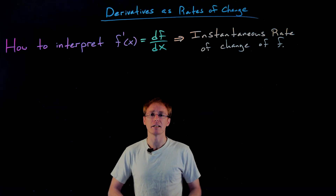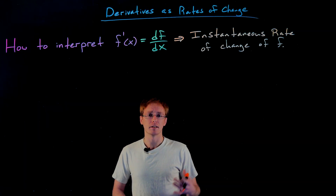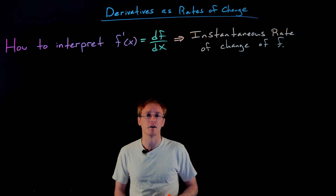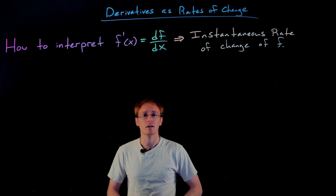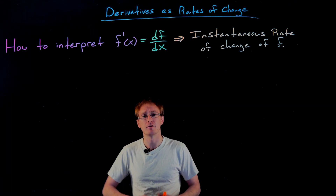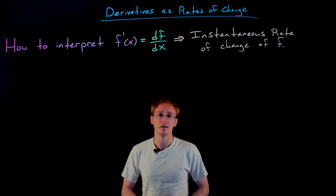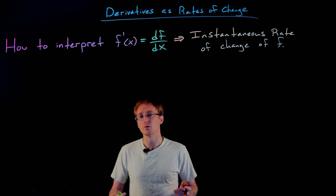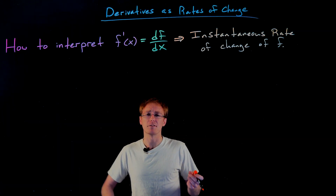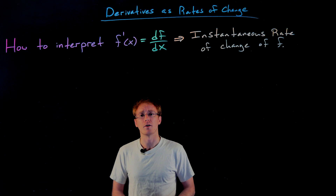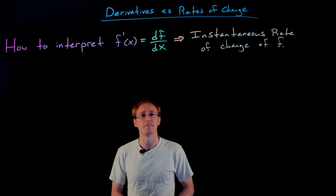When providing an interpretation we want to give more context than just saying it's the instantaneous rate of whatever our function is. So how do we actually write a sentence providing that interpretation? I want to give us a Madlib or fill-in-the-blanks. Once we fill in those blanks we should only have to tweak it slightly to get the correct interpretation no matter what our function f is describing.